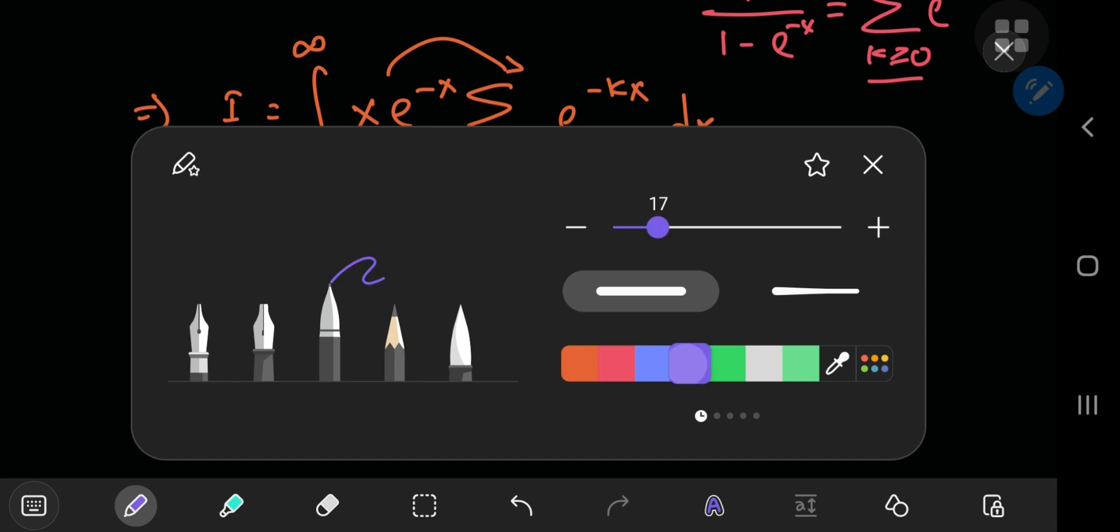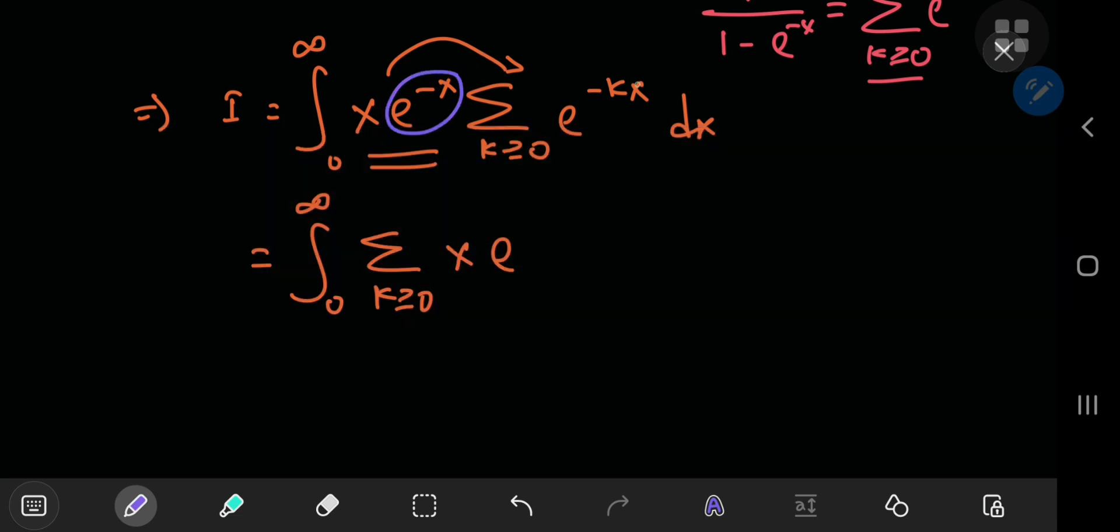We will have the integral from 0 to infinity of the infinite sum over k of x times e. Now these two exponential terms will multiply and because the bases are same, the exponents will add up. So you have negative x minus kx and this simplifies to negative k plus 1 times x and the integration here is with respect to x.